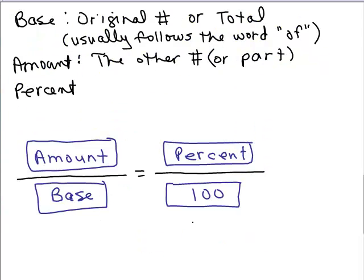Now, it doesn't always work out quite that easily. But we can set up what's called a proportion to figure out this problem. Here's a setup for solving a problem using proportions. We have what's called the base. That's our original number or our total. The amount, in this case, is the other number or part. I'm careful of this because sometimes the amount might be bigger than the original number. And then there's the percent.